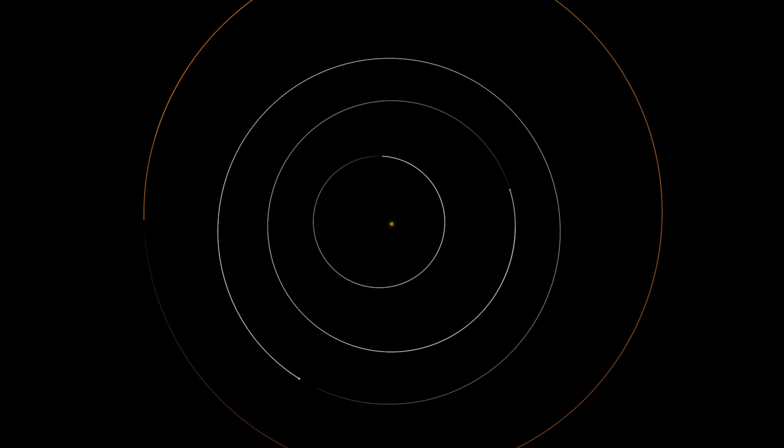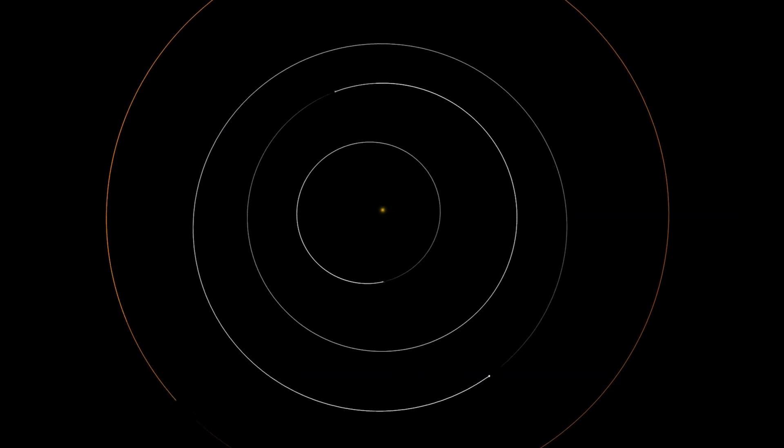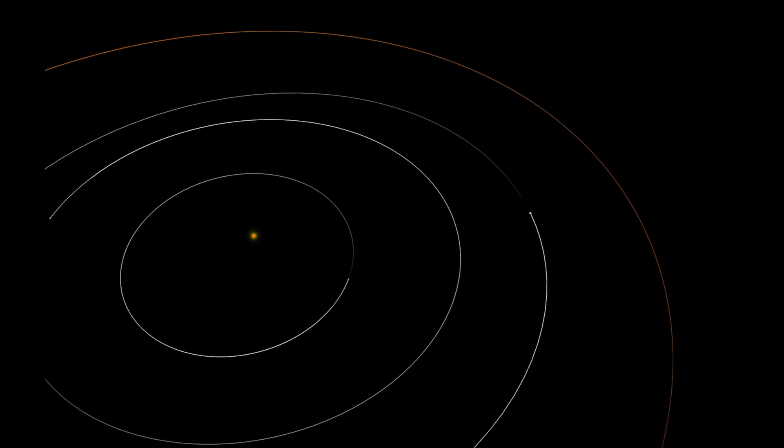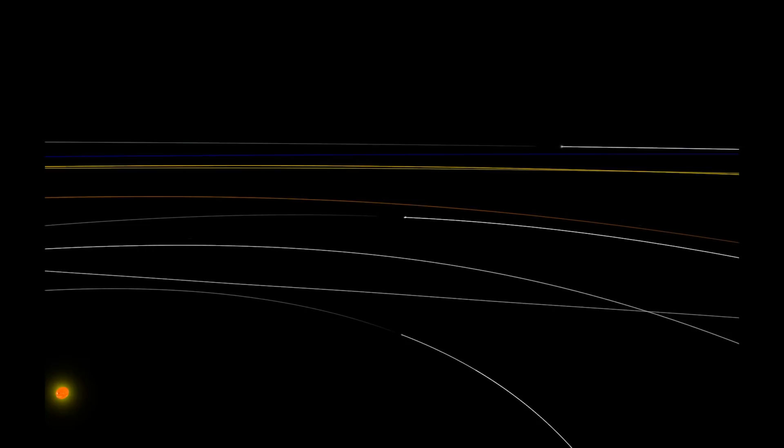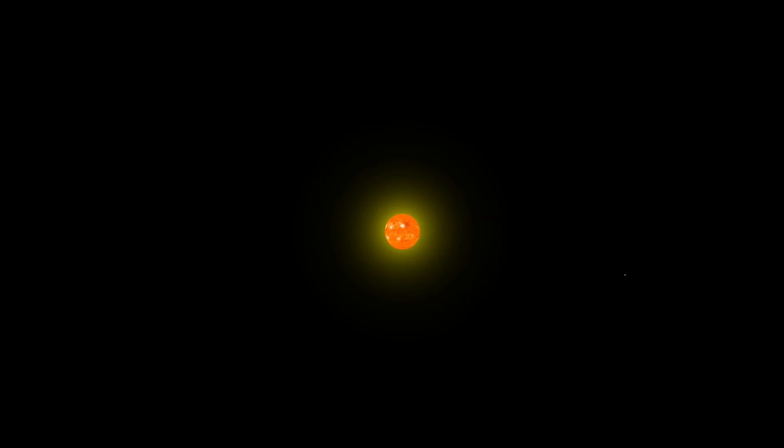Now let's advance time to a date when astronomers know an eclipse will happen. Let's go back to that same view where we've lined up the sun and the earth.